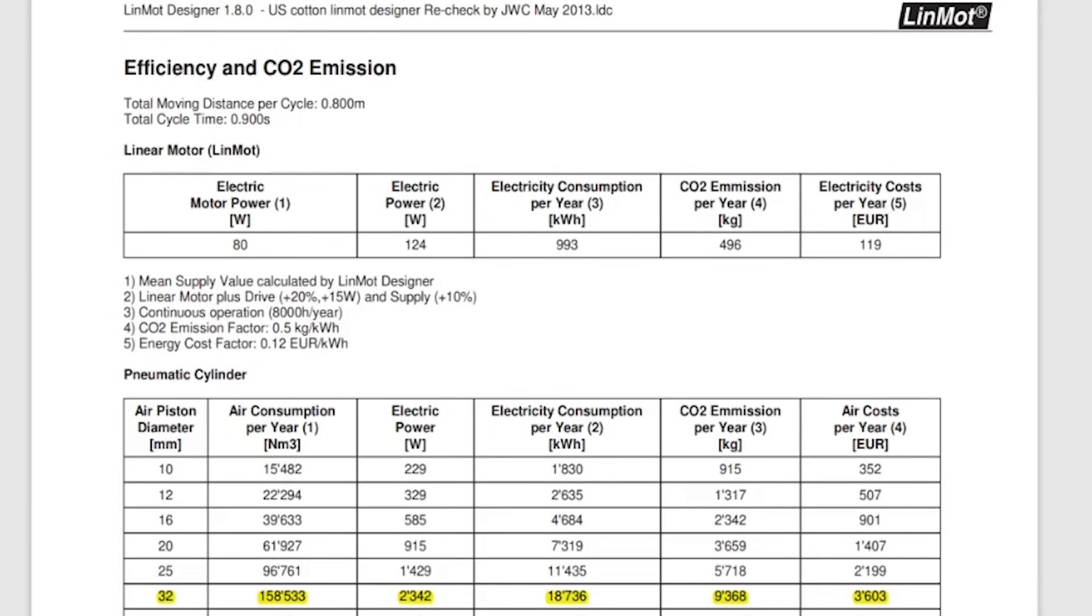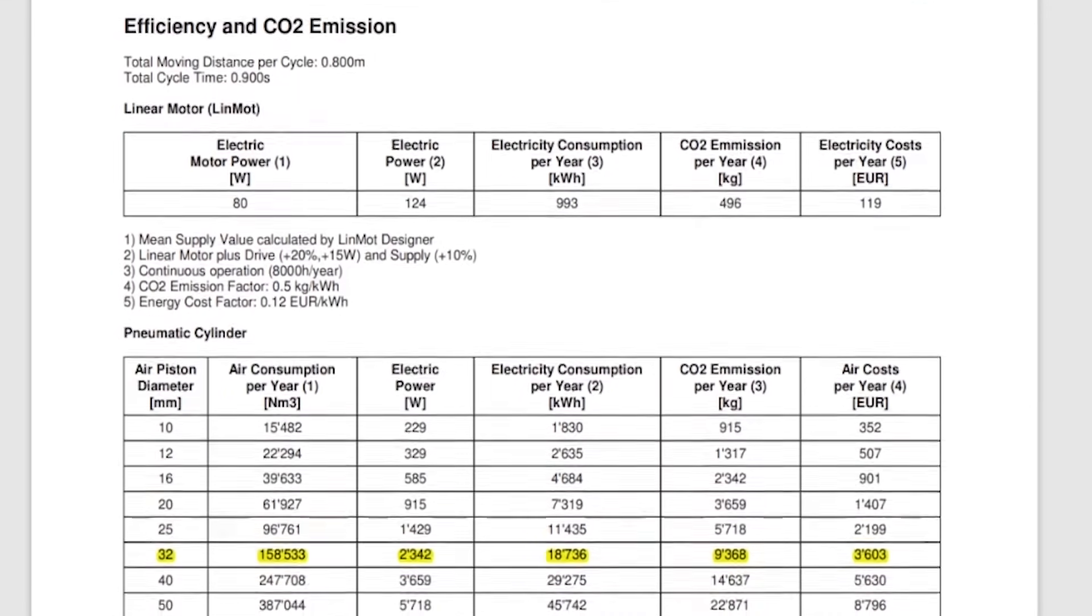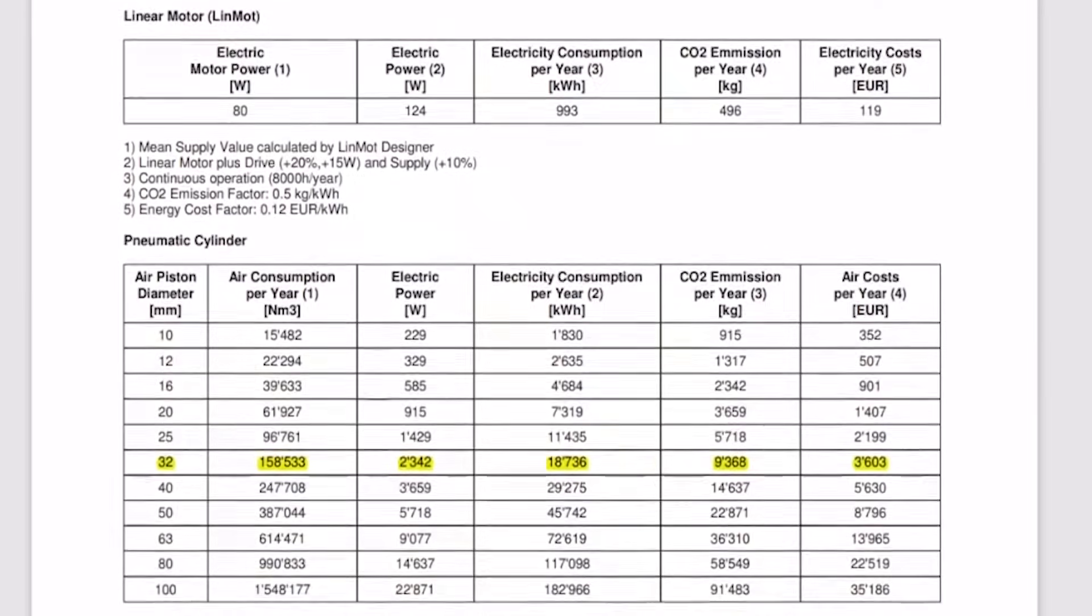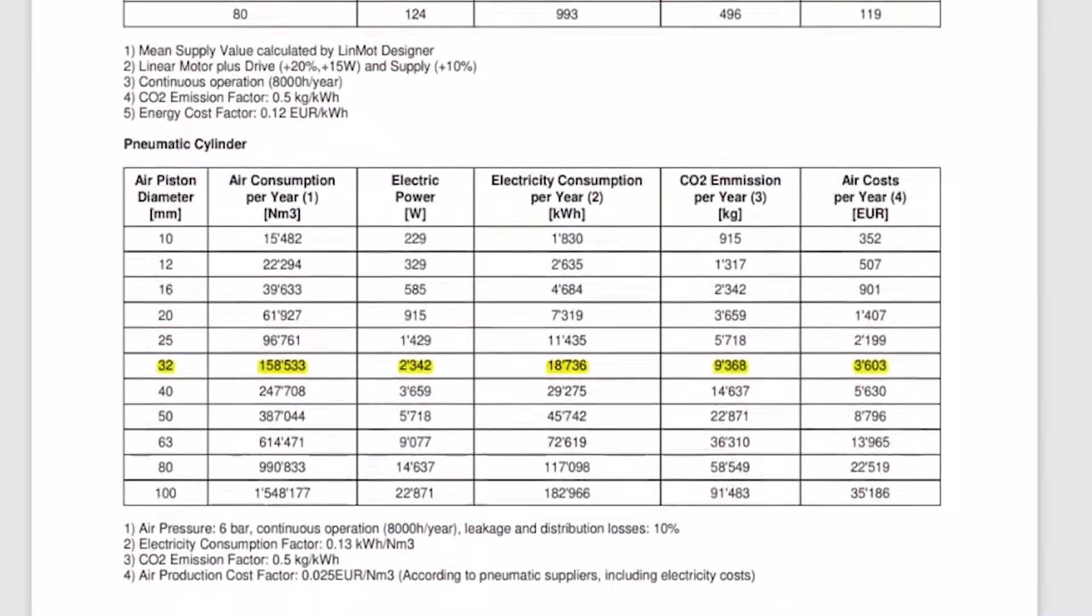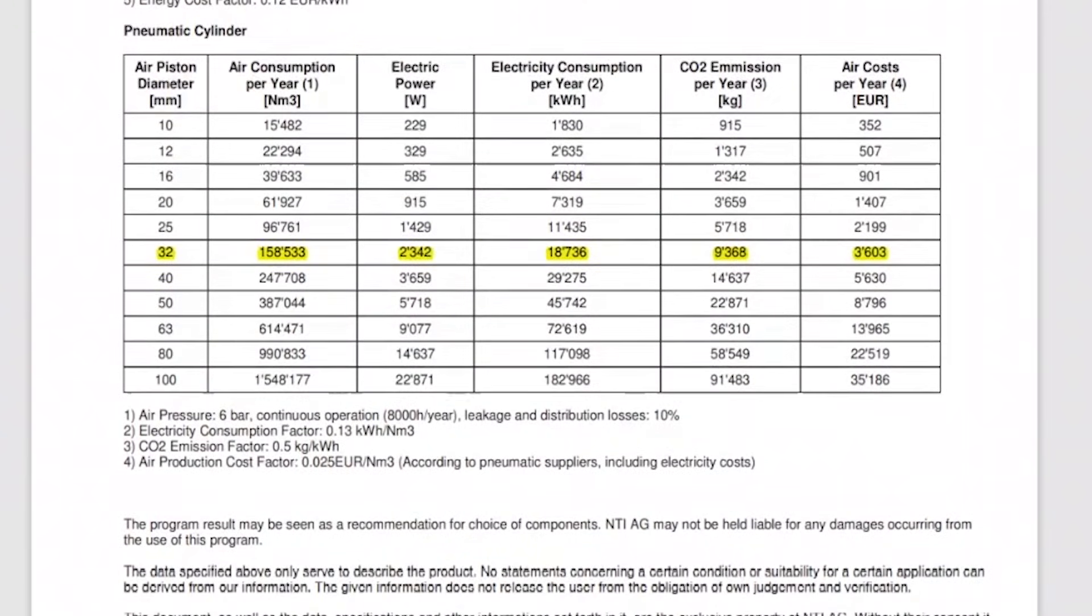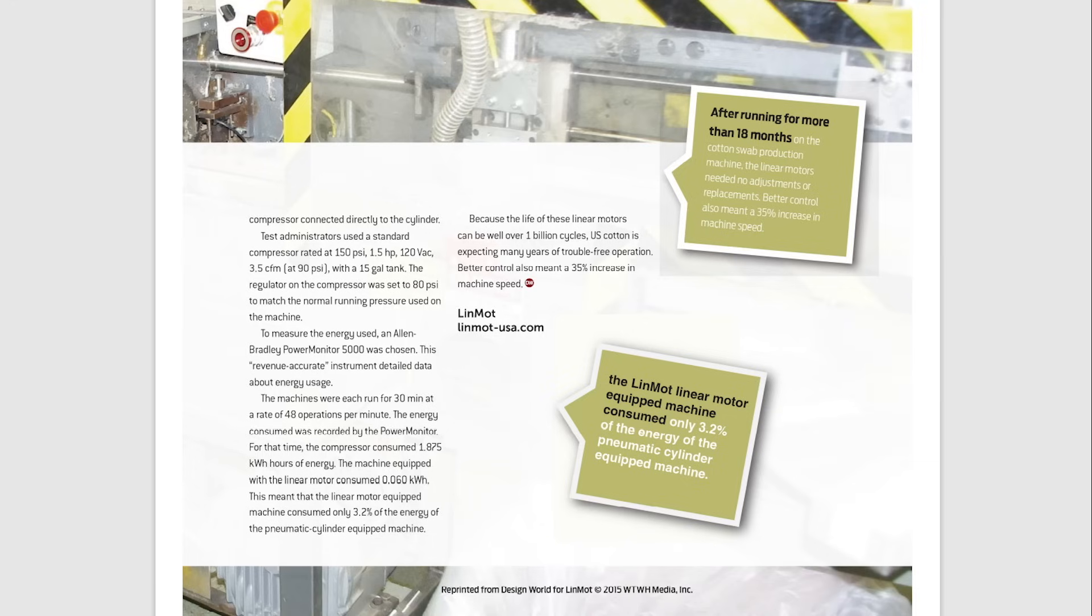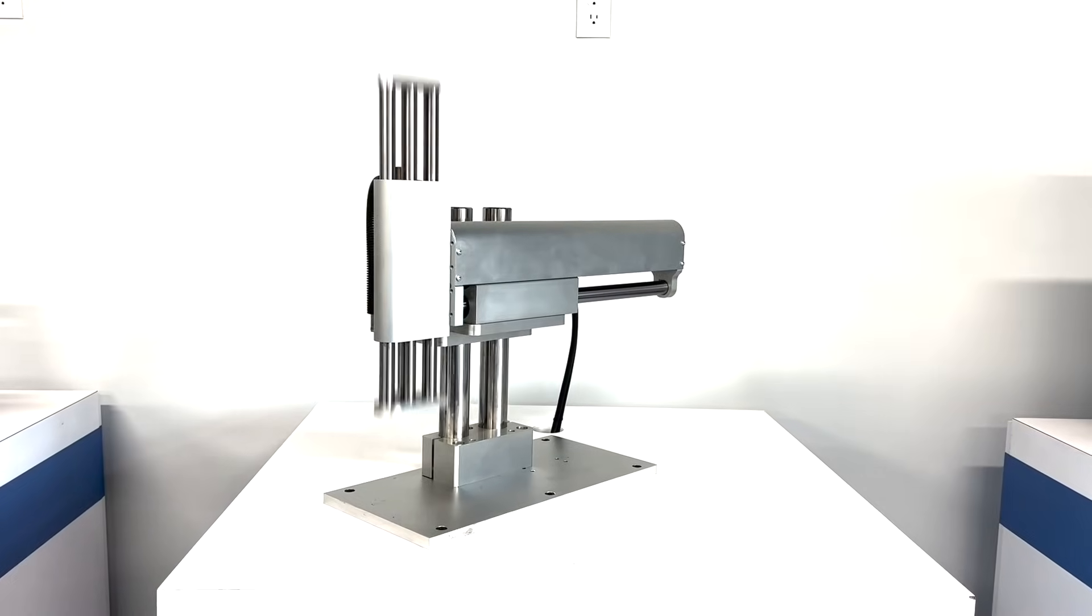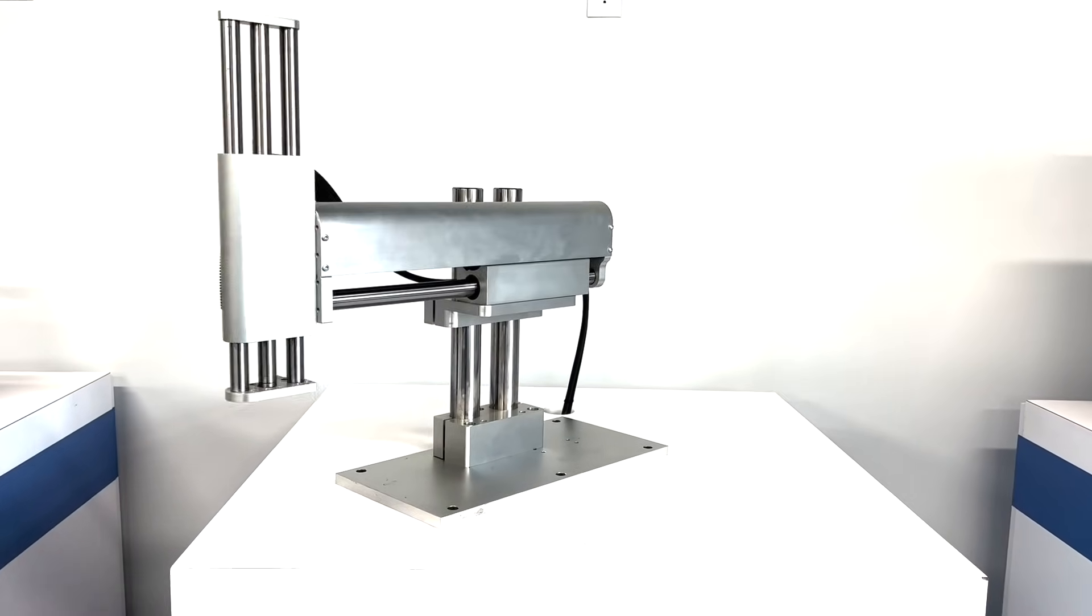According to the US cotton study done by Linmont, they found that after 18 months of comparing pneumatic to electric linear motors, the Linmont electric linear motors used only 3.2% the amount of energy that the pneumatic motor used. And because the Linmont motor is good for well over a billion cycles, this leads to a 35% increase in machine speed, more precision, and less downtime compared to the pneumatic motor.